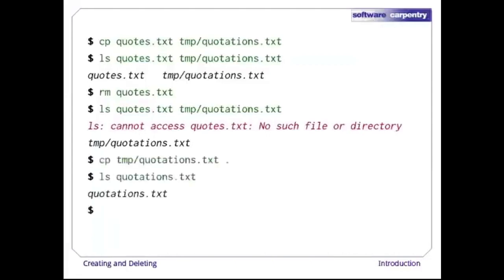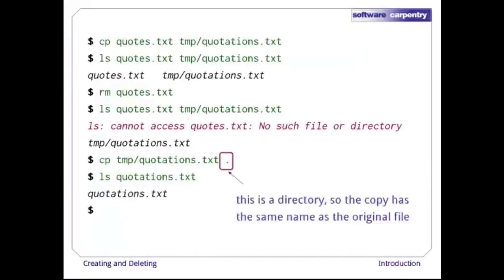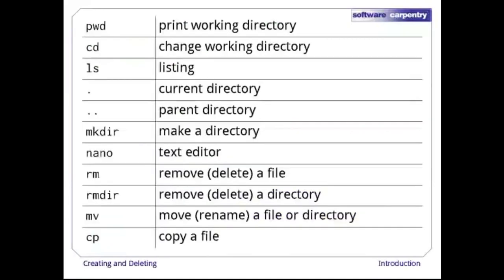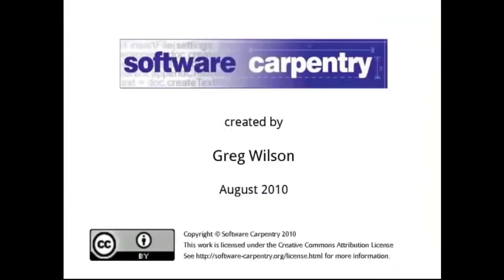Let's make one more copy. This time, though, we don't specify the destination file name, just a directory, so the copy will keep the original's file name. To summarize, here are the commands we've seen so far, along with the two special directory names. In the next episode, we'll see how to operate on text files using pipes and filters.